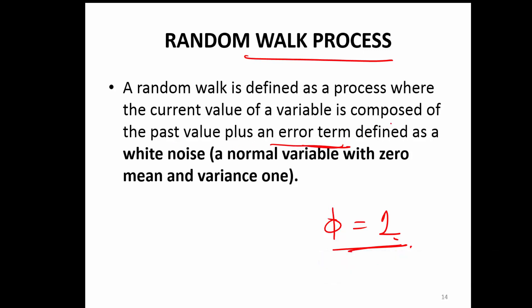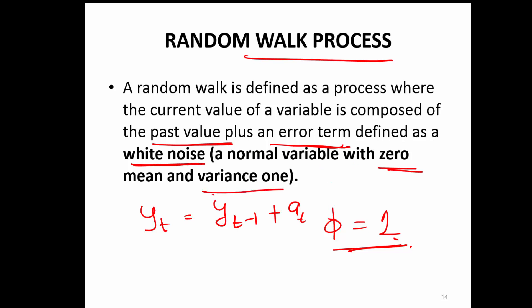So there are two important things in a random walk series: you have the past value term and the error term, nothing more than that. So yt is the current value — it is just the past value plus an error term at. This error term is typically also known as white noise, where you have zero mean and variance of 1.